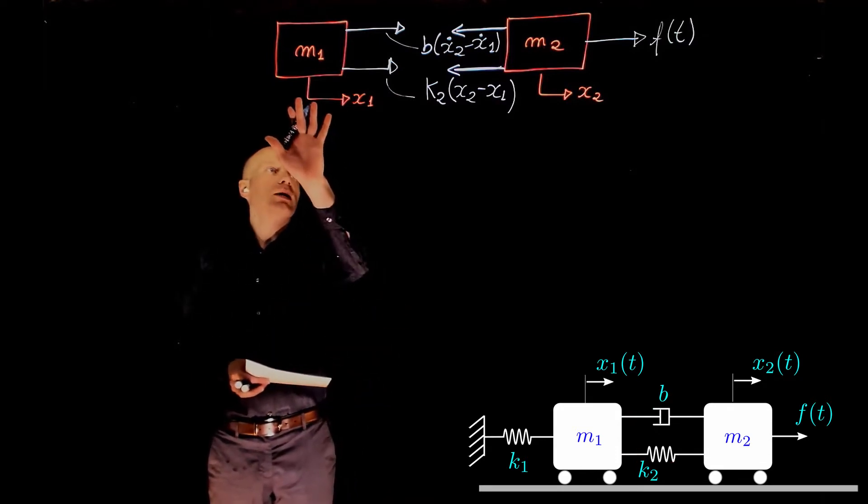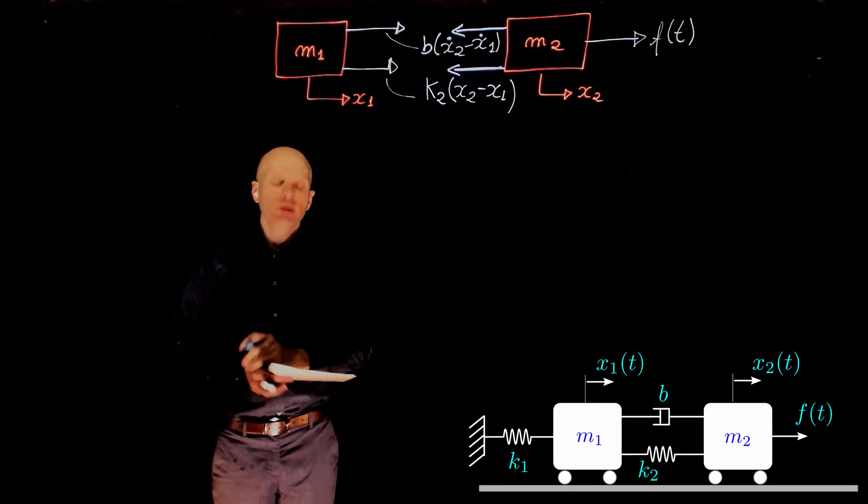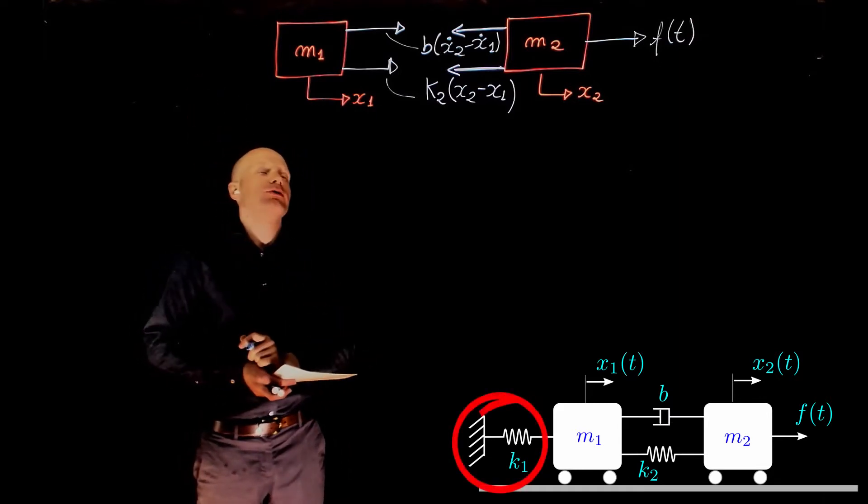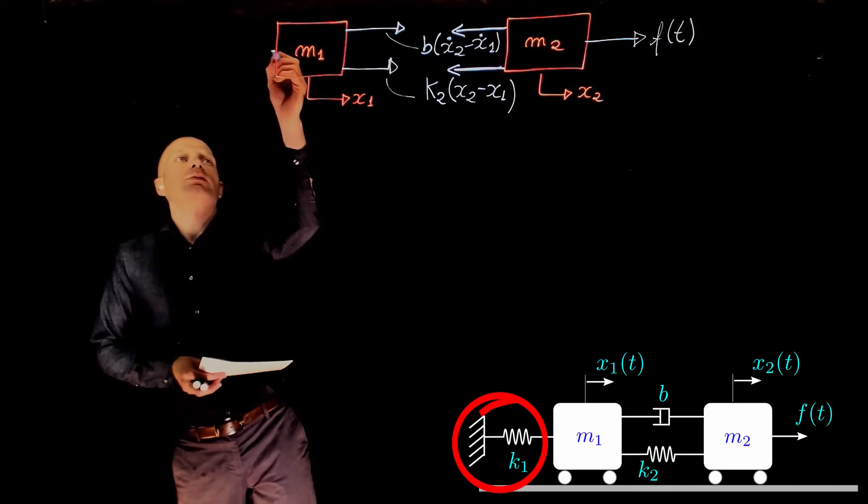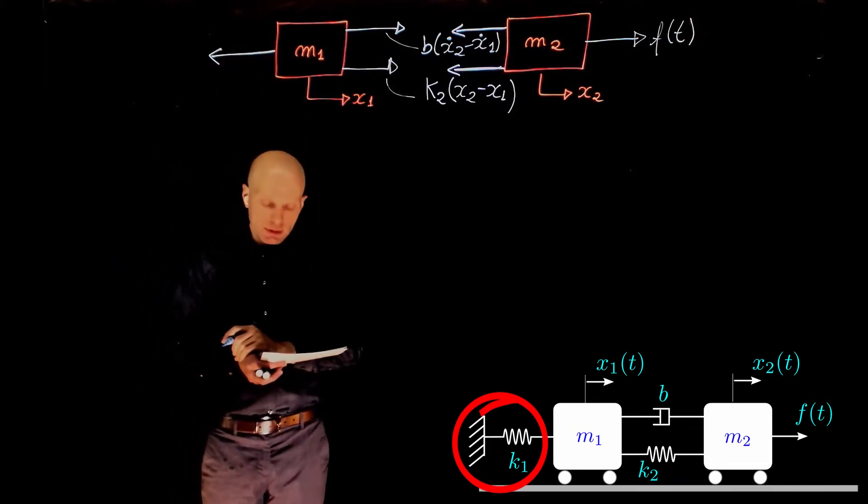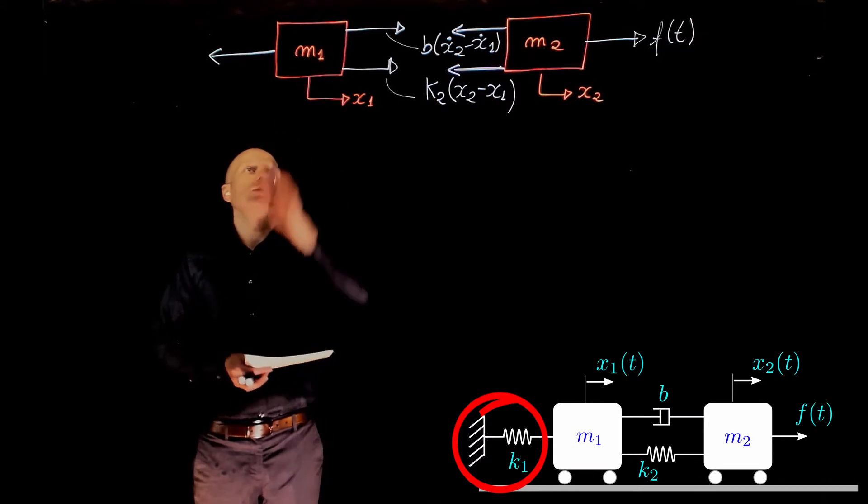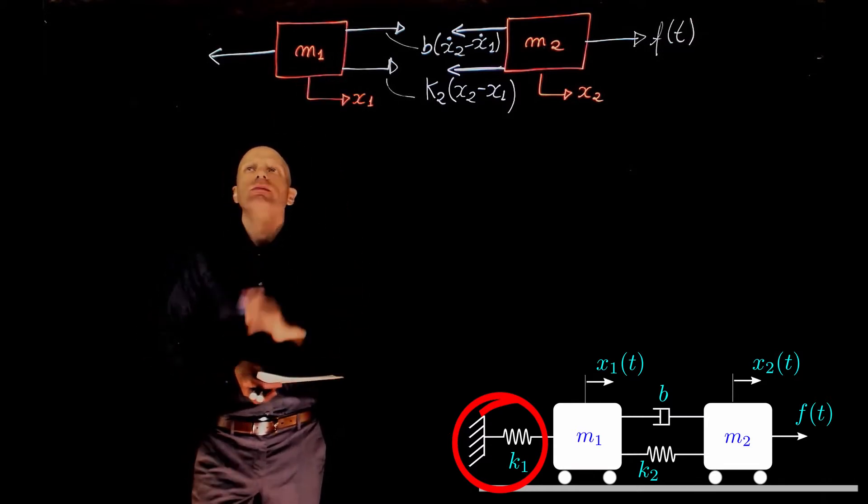If now mass M1 moves to the right, mass M1 is connected to a spring that is connected to a fixed reference frame. Replacing the force that spring creates gives us the free body diagram for mass M1.